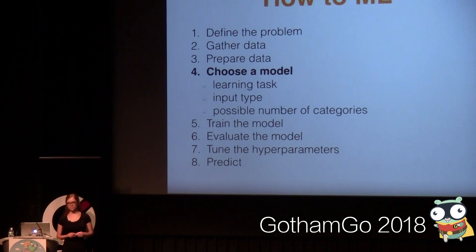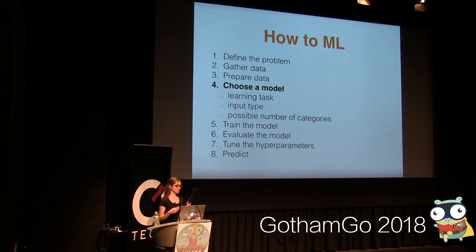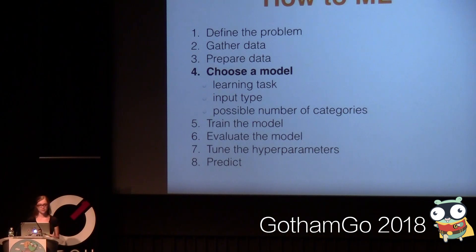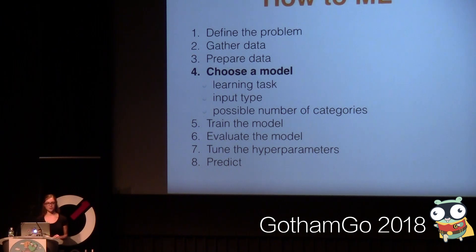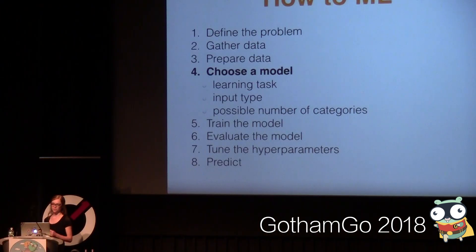Then we choose a model. The model depends on the learning task as defined at the start, on the type of input — whether it's an integer, an image as a byte array, or strings for predicting the next word — and on the possible number of categories. For hot dog / not hot dog, we have two categories. For digits, we have 10: 0 through 9. But for faces, it can be billions of categories. All those factors define which model is best for you.